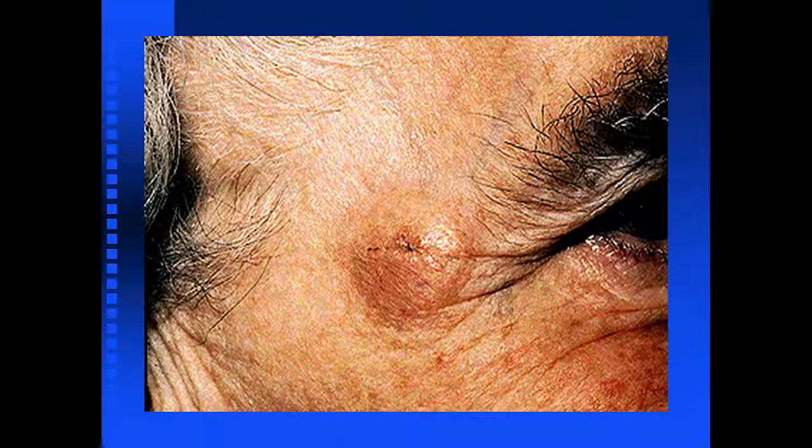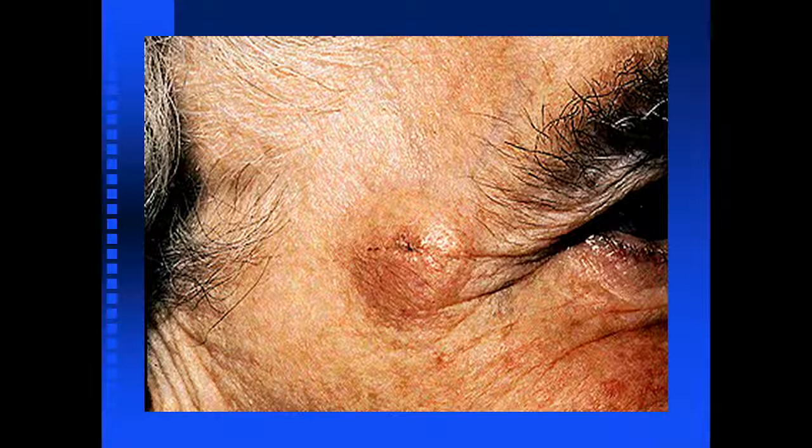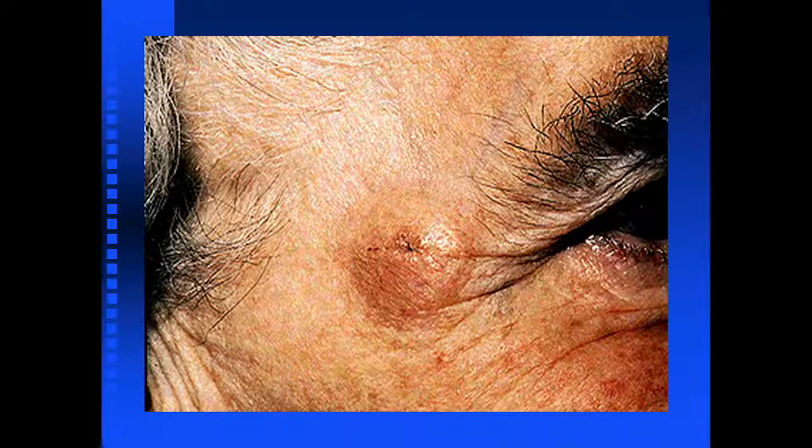Here we see this patient on sun-exposed skin with obvious coarse wrinkling. On his cheek there's an elevated nodule with a slight macular hyperpigmentation. Looking at this, it doesn't really look very worrisome, and you may be inclined just to follow the patient or not do anything.